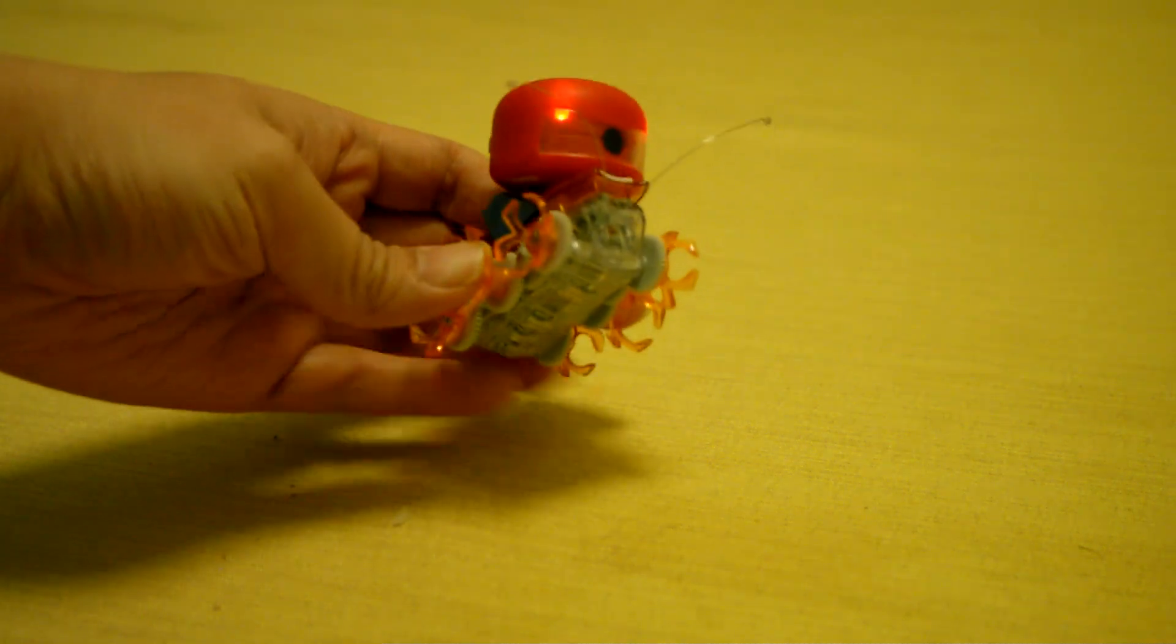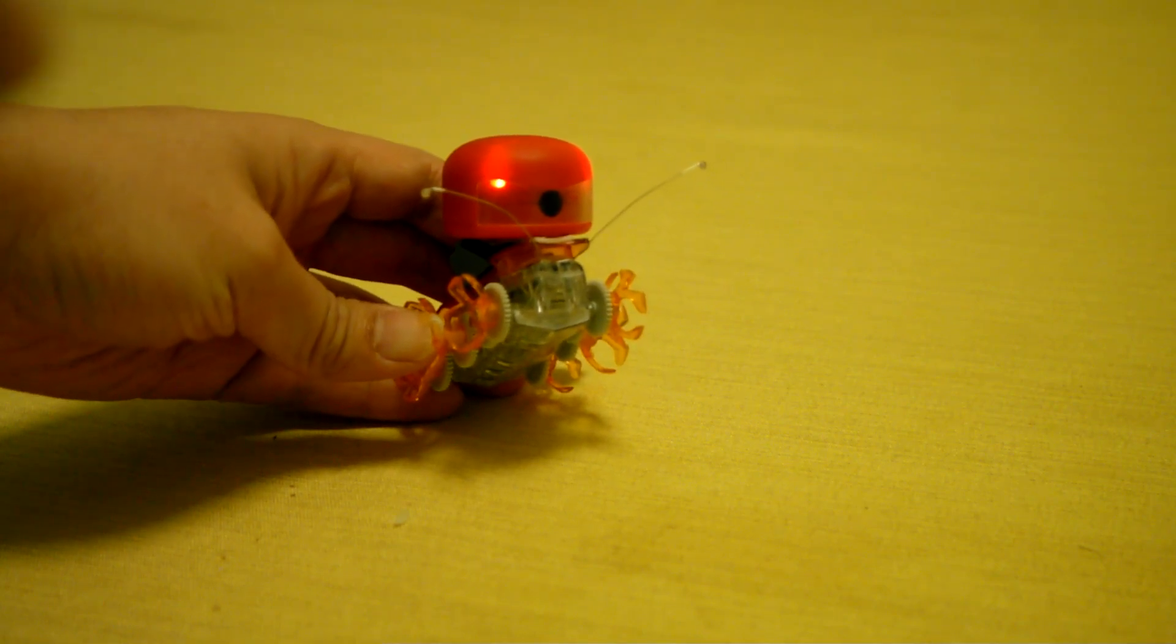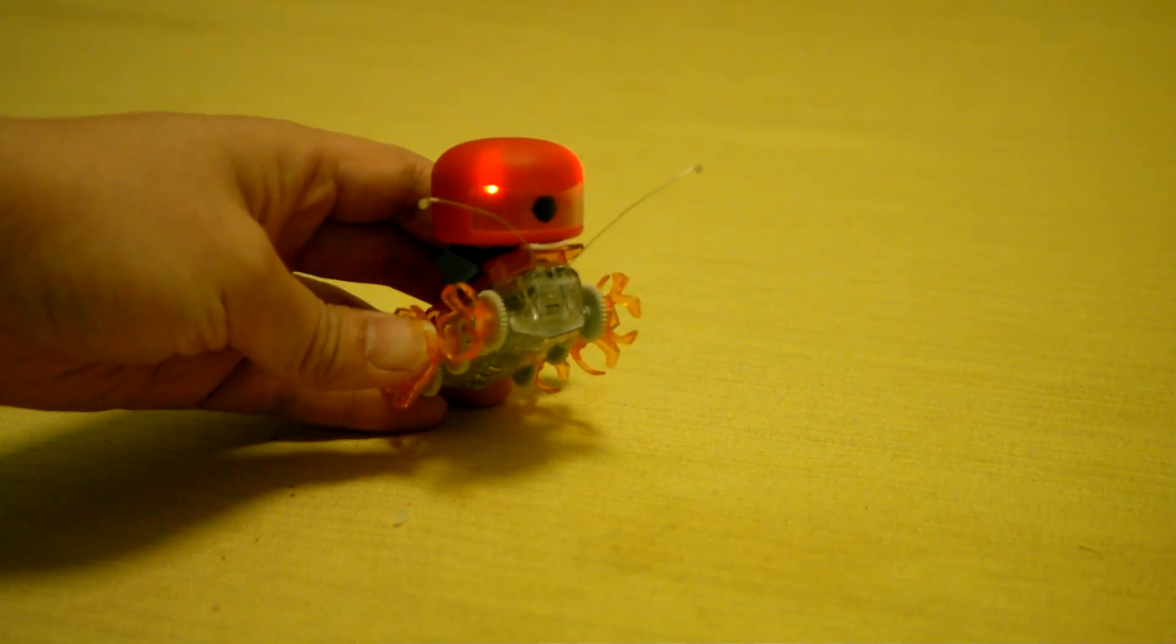On the bottom is the hexbug fire ant. You can see the camera sensor, that's the black spot in the middle of Mu.